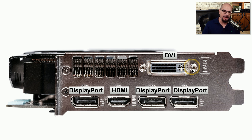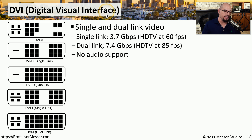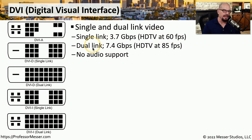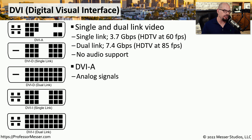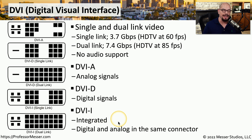This video card also has a DVI connector, and there are many types of DVI interfaces. DVI stands for Digital Visual Interface, and there are many different types in the DVI family. These allow you to send video signals over what we call single link and dual link. A single link connection supports 3.7 gigabits of throughput, which allows us to view high-definition television at 60 frames per second. Dual link connections have effectively twice as much throughput and allow us to view HD television at 85 frames per second. DVI is a video connection only and does not pass any audio signals. DVI supports both analog and digital connections — there's DVI-A for analog, DVI-D for digital, and DVI-I, which is an integrated connection allowing both digital and analog communication in the same connector.